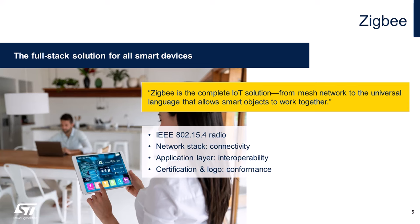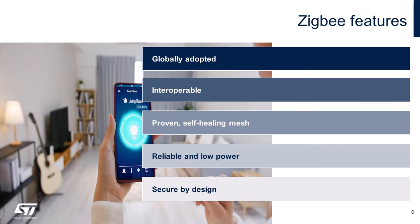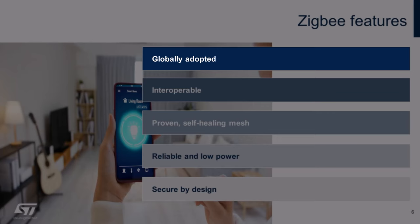ZigBee takes full advantage of IEEE 802.15.4 physical radio standard and operates in unlicensed bands at 2.4 GHz and sub-GHz. Raw data throughput rates of 250 kbps can be achieved at 2.4 GHz. Transmission distance ranges from 10 to 100 meters depending on output power and environmental characteristics. ZigBee networks vary from a few devices to hundreds of devices operating seamlessly, employing different routing mechanisms to optimize network operation. Due to low power consumption, it is ideal for battery-operated devices. ZigBee is a mature, market-proven technology that supports an extensive library of applications deployed by hundreds of companies around the world.